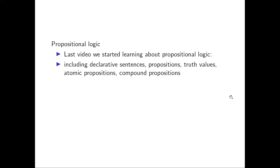Given any proposition we can assign it a truth value, which is either true or false. It has a truth value of true if the proposition is true, and false if the proposition is false. We denote true by T and false by F.